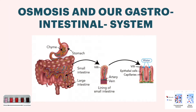Now let's look at osmosis in our gastrointestinal system. When you eat food or drink water, it travels from your mouth down your esophagus into your stomach. In the stomach, food is broken into tiny pieces mixed with stomach liquids. This mush of food and stomach liquids is called chyme. The chyme then travels into the small intestine, and that's where osmosis takes place.